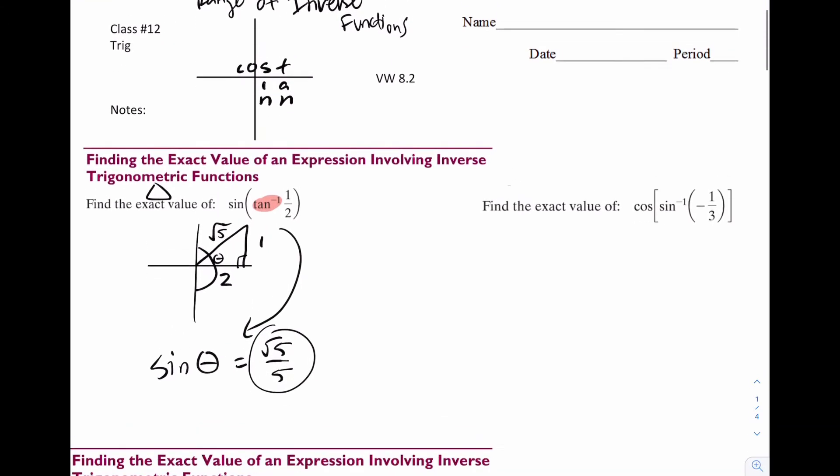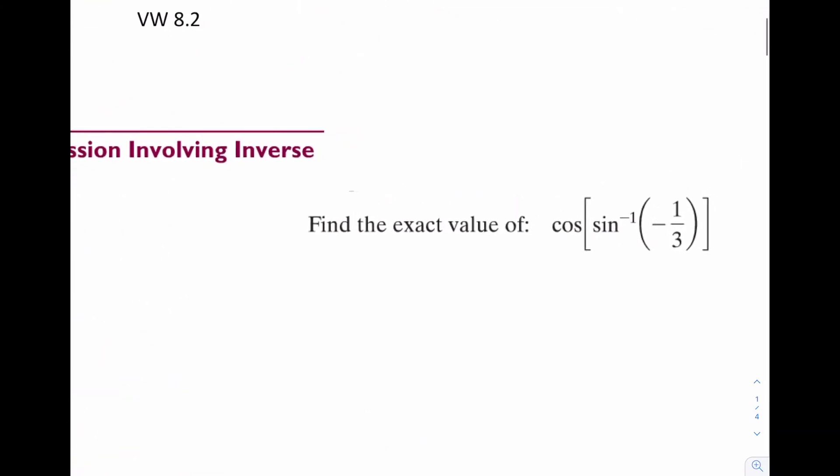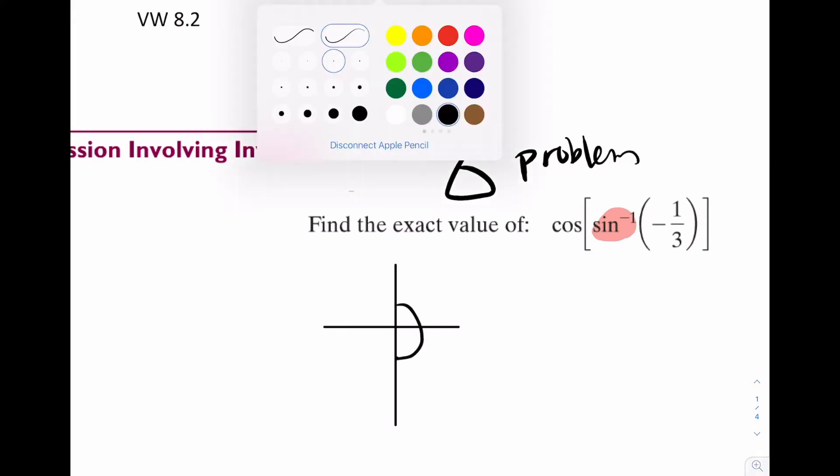Let's try another one here. Find the exact value of this. Let's highlight where the inverse is. That's clearly a triangle problem. So sine, that is quadrants one and four. Now notice how it's negative, which means your triangle should be quadrant four.